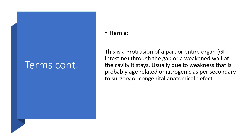A hernia is a protrusion of a part, or sometimes of the entire organ, mostly involving the gastrointestinal tract, including the intestine, through the gap or the weakened wall of the cavity where it belongs. Usually due to weakness that is probably age-related, sometimes iatrogenic — secondary to surgery — or as a result of a congenital anatomical defect.